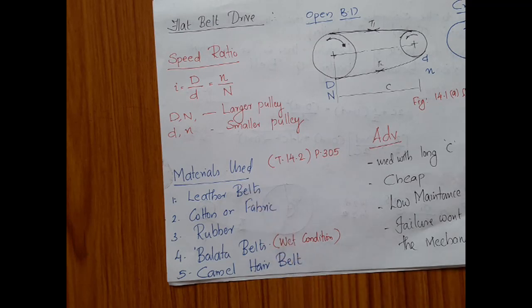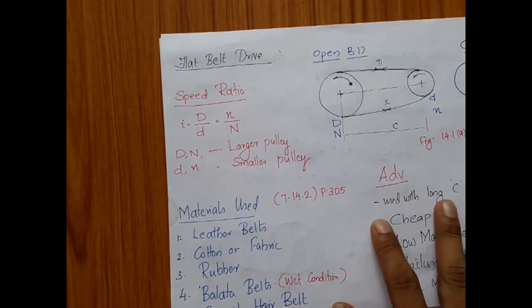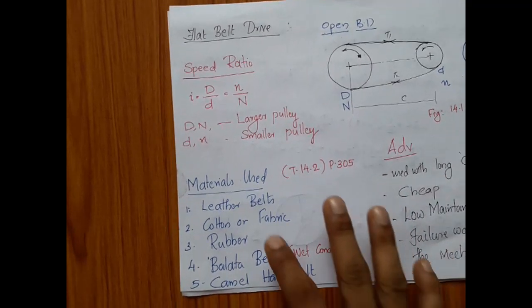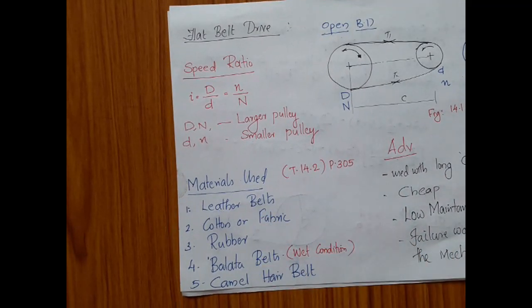The details about the various materials used for the belt, their advantages as well as disadvantages, are covered in standard textbooks. Kindly go through some standard textbooks for details about the different types of materials used. If you don't find the materials, kindly contact me and I can supply them.